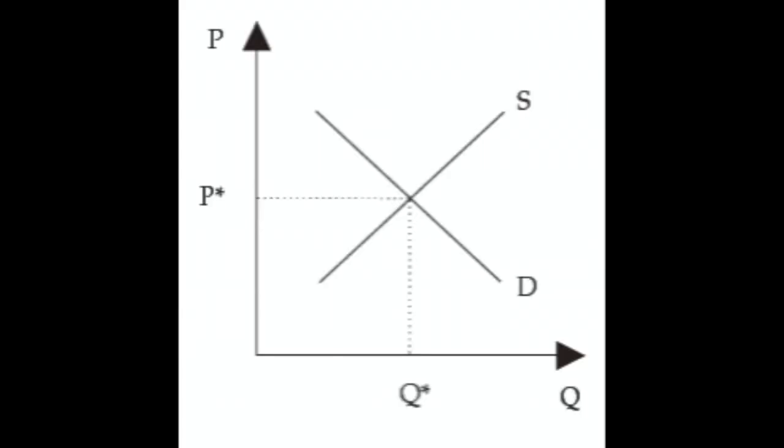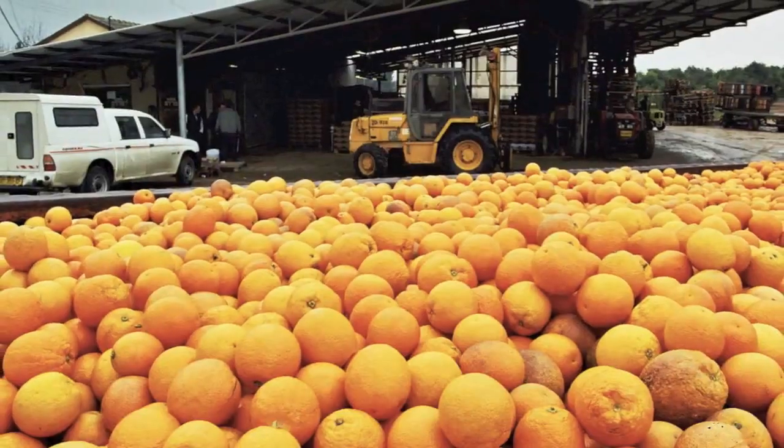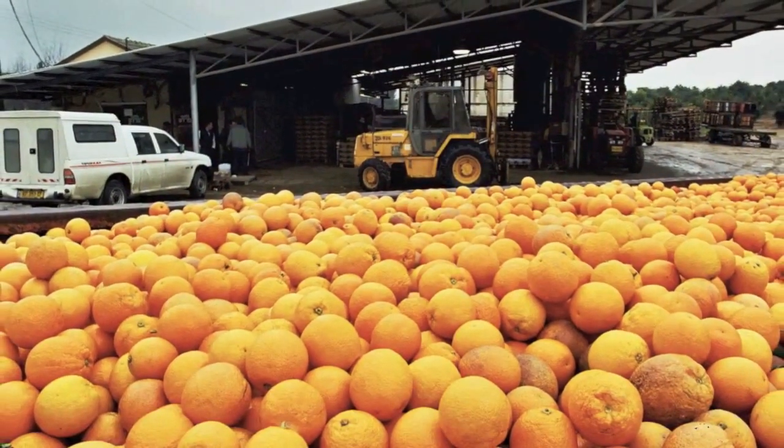Thinking of the orange market — there's really unusually good weather. How would we analyze that using a standard supply and demand framework? Draw your original generic supply and demand curves and have them intersect, giving you your original price and original quantity. Really good weather in Florida allows farmers to grow more oranges — is that going to affect supply? This is just the epitome of a supply increase, because now the orange growers just have more oranges on their hands, so at various hypothetical prices they're going to bring more to market.